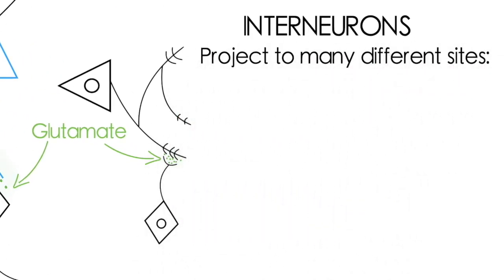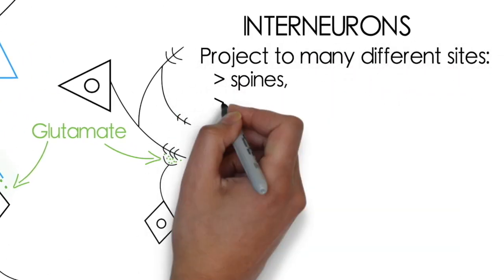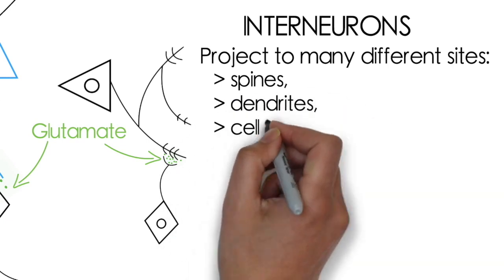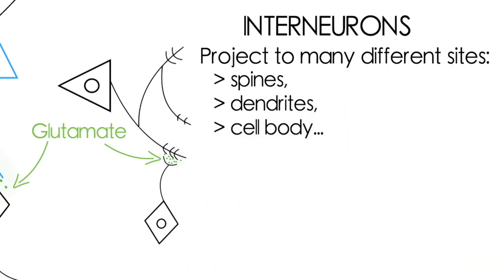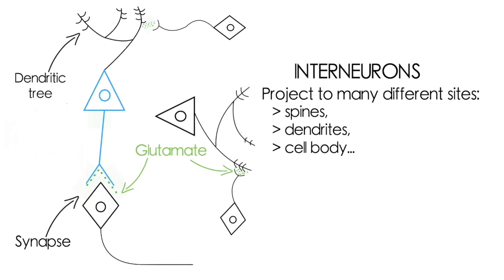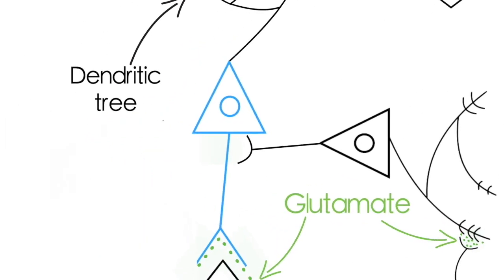Interneurons come in lots of different types, which project to all different sites, so to the spines, the dendrites, the cell body. And one type of interneurons is called chandelier cells, which synapse onto the first part of the axon, just as it's coming out of the neuron here, and these lines of synapses look like candles.